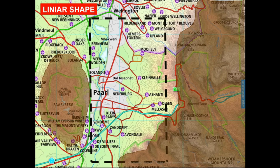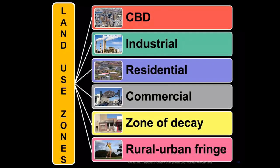We've got a linear-shaped Paarl — most of you probably know Paarl and it's got one of the longest main streets in this area. When we look at the city, we go back to Cape Town. If we go to Cape Town, we can identify different areas, and those areas are called land-use zones.